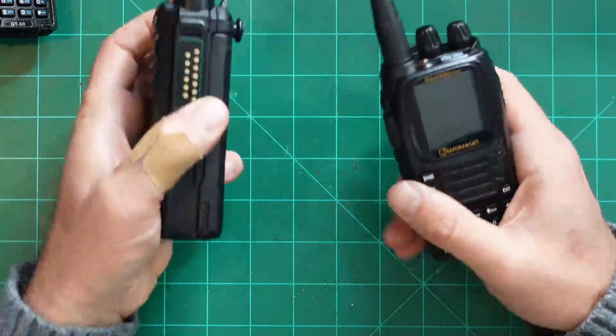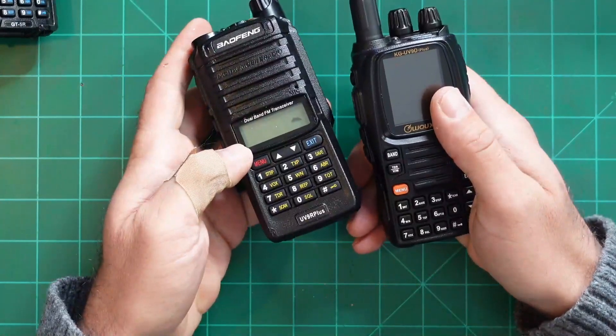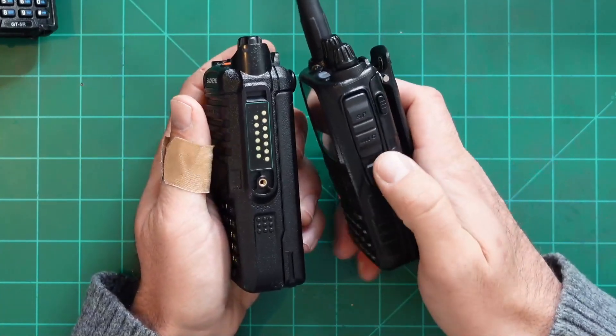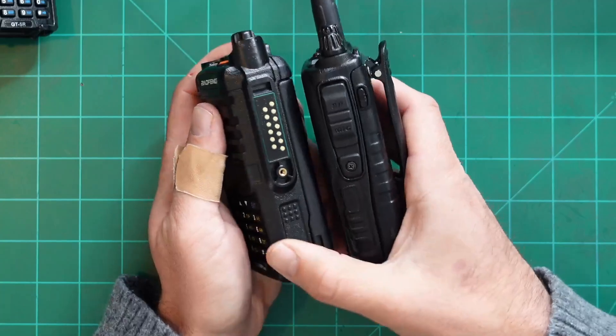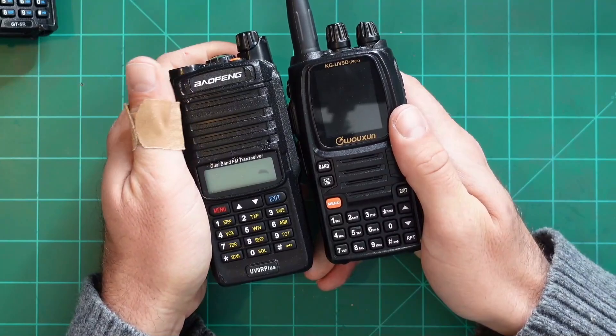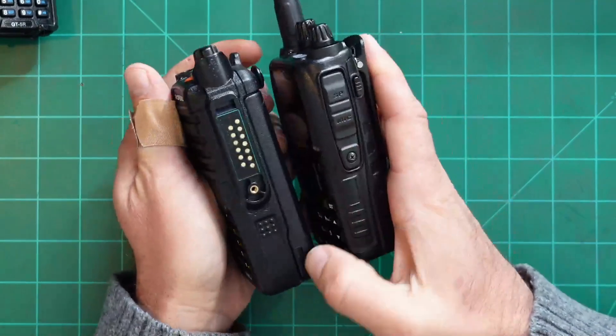This radio, if you were to compare it in size to something like a UV9R Plus, it's a lot thinner and a lot slicker of a profile as you see the rounded edges, whereas the Baofeng is more boxy and they're about the same height. The Baofeng is actually a little bit bigger or taller rather.